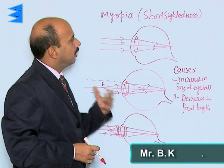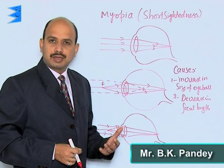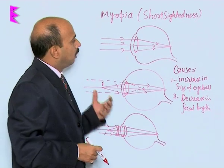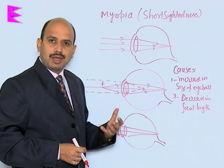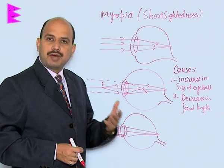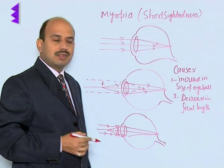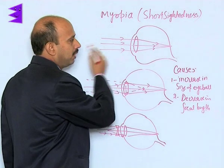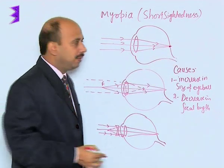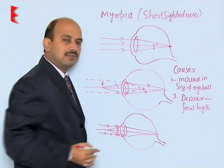Now, see a myopic eye, that is myopia, which is short-sightedness. This is the first defect of the human eye. Now, the normal eye has got the far point at infinity. If the object is at infinity and rays are coming from infinity, they are meeting on the retina and the image is obtained there, and you can easily see.